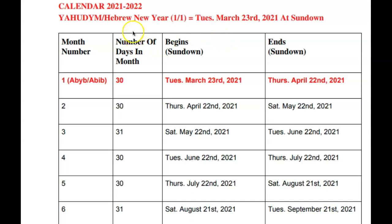It's important that you understand that the Ya Udym, or the so-called Hebrew New Year, always begins sometime around the springtime. For the upcoming year of 2021, it will begin the evening of March 23rd, 2021, when the sun goes down. The first scriptural month is always sometime in the spring, and according to the Canute-Enoch calendar, it's divided by a 30-30-31-day system for each of the corresponding months.